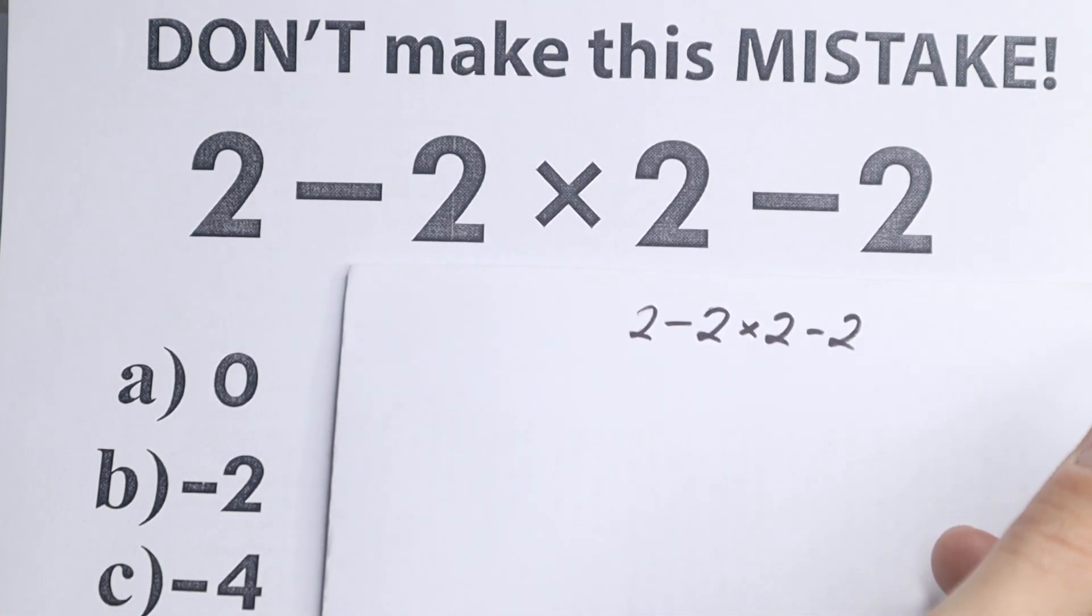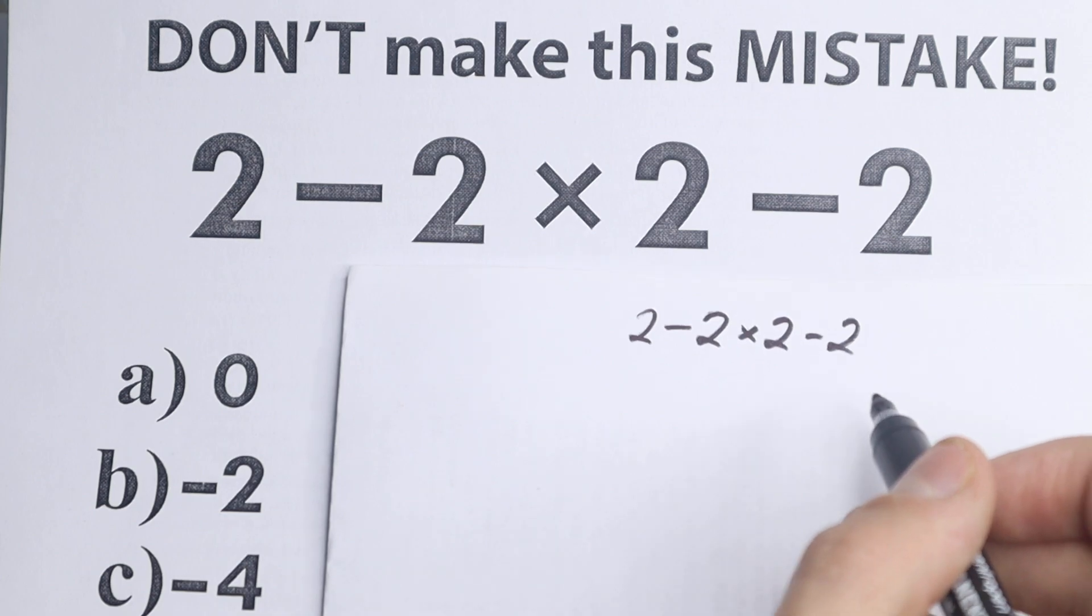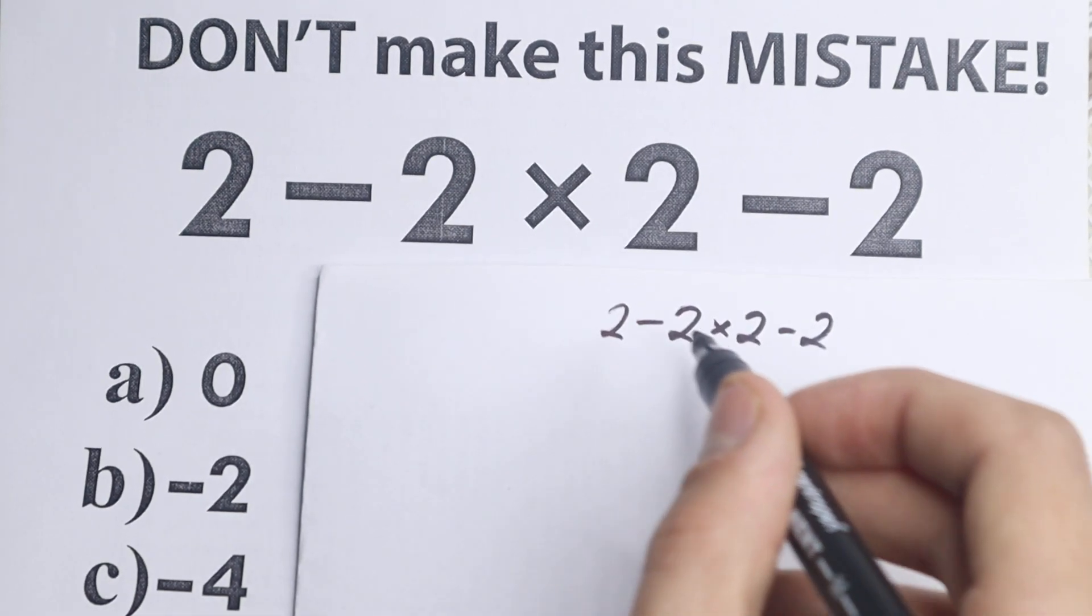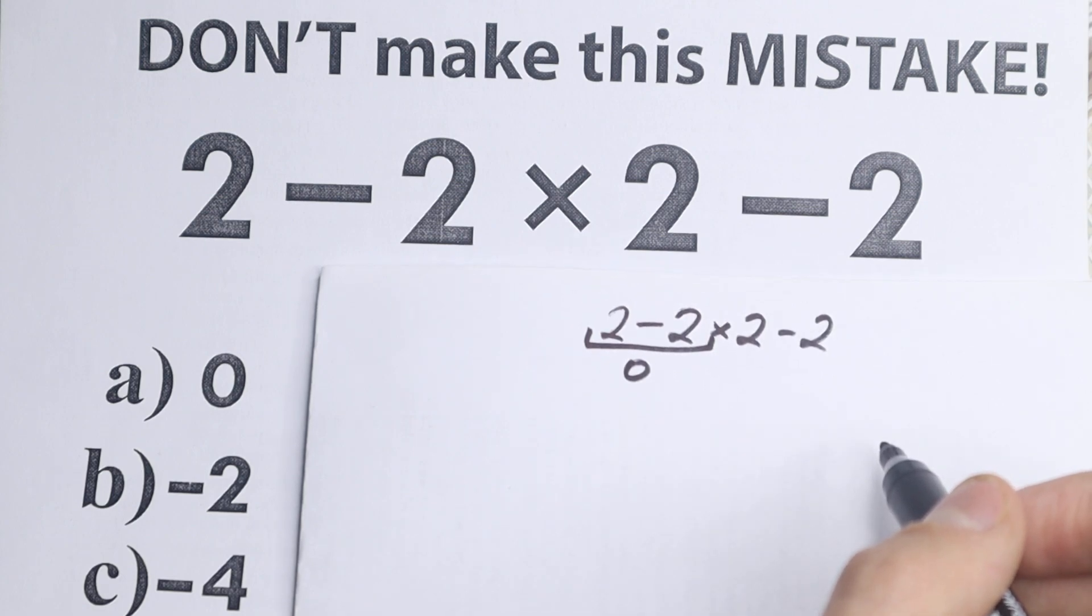Okay, what is the first way to solve this problem? Right now I don't want to tell you if this is correct or not, but let's look at the first approach. A lot of students solve it like this: 2 - 2, which equals 0. A lot of students start with 2 - 2 equals 0.